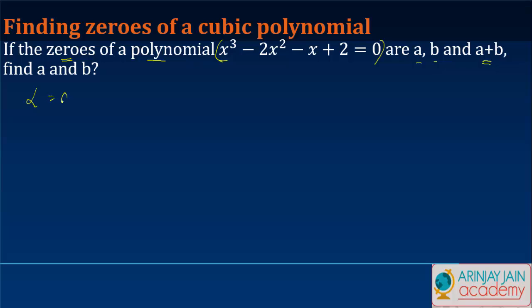So in this case what you are told is that α = a, β = b and γ = a+b. These are the three zeros that you have been given. Find a and b. You have to find out the value of a and b.